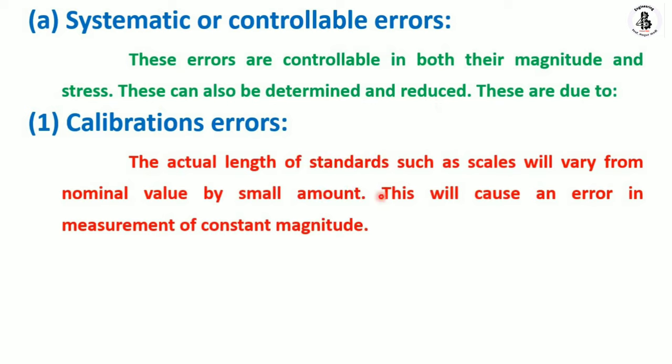Calibration error occurs because the actual length of a standard, such as a scale, may vary from its nominal value by a small amount over time. If an instrument is damaged, it will produce a constant magnitude of error in every measurement. You should therefore carry out periodic calibration of measuring instruments.